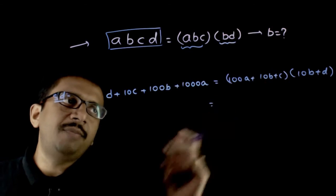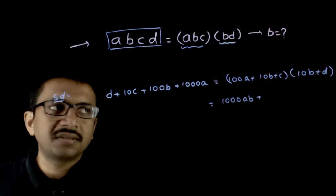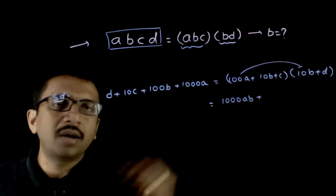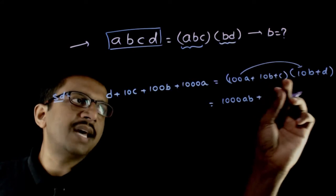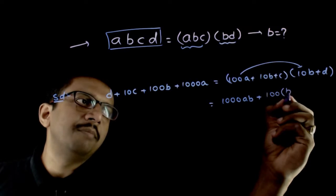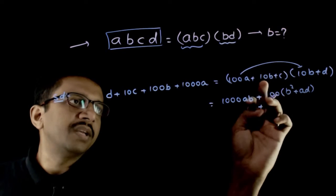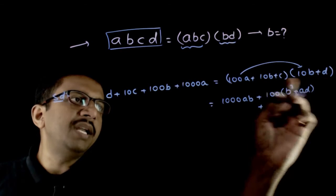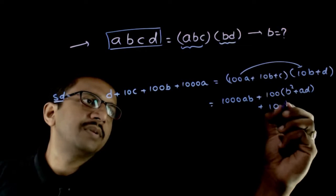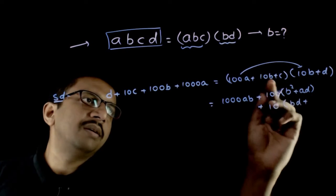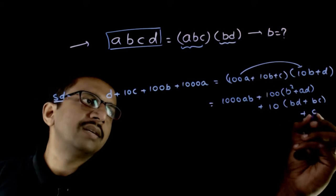That is equal to, if I multiply these two, I get 1000AB plus 100AD plus 100B square. So 100 times B square plus AD plus 10BD plus 10BC. So 10 times BD plus BC plus CD.